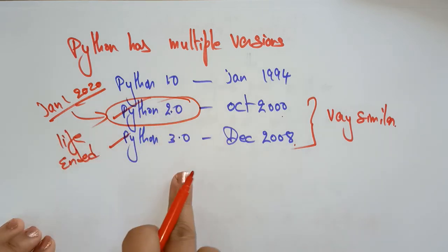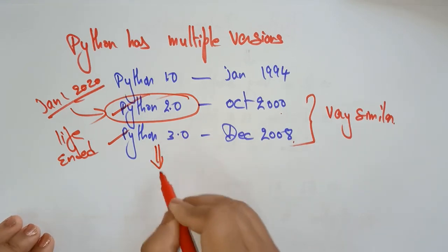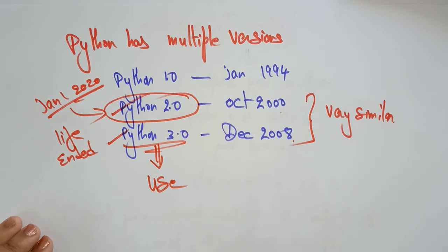On January 1st, 2020, the life is ended. Life ended for the Python 2.0. So, now everyone has to use the Python 3.0 only. Remember students, when you are trying to install.